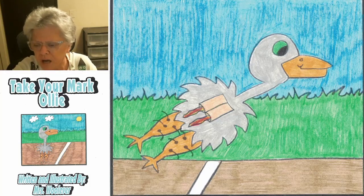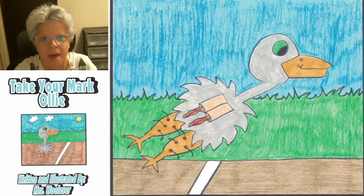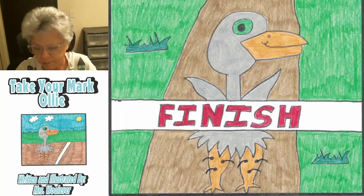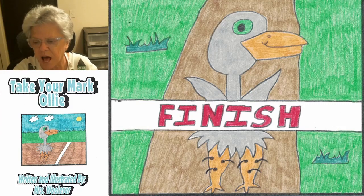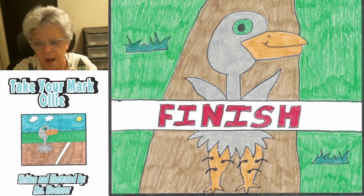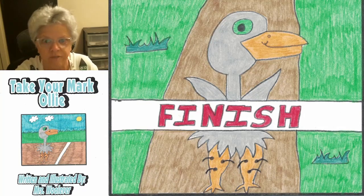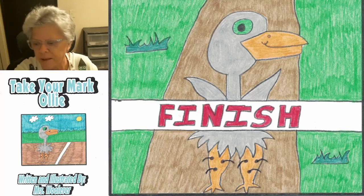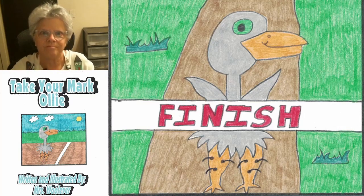Ollie took off like he had rocket packs attached to his back. Before you knew it, Ollie was across the finish line. He had beaten all his friends. When they all reached the finish line, they gave Ollie high fives and low fives. They lifted him up in the air and walked him back to class. The end.